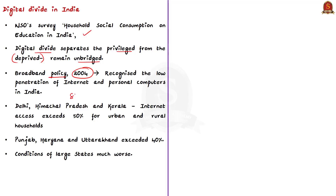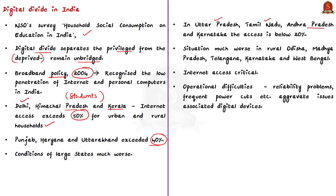According to the survey, only in Delhi and states like Himachal Pradesh and Kerala does internet penetration exceed 50% for urban and rural households taken together. In states like Punjab, Haryana and Uttarakhand, it exceeds 40%. But the conditions of large states such as Uttar Pradesh, Tamil Nadu, Andhra Pradesh and Karnataka show an access rate of less than 20%, which looks contradictory to the fact that AP is perceived as a tech-savvy state.